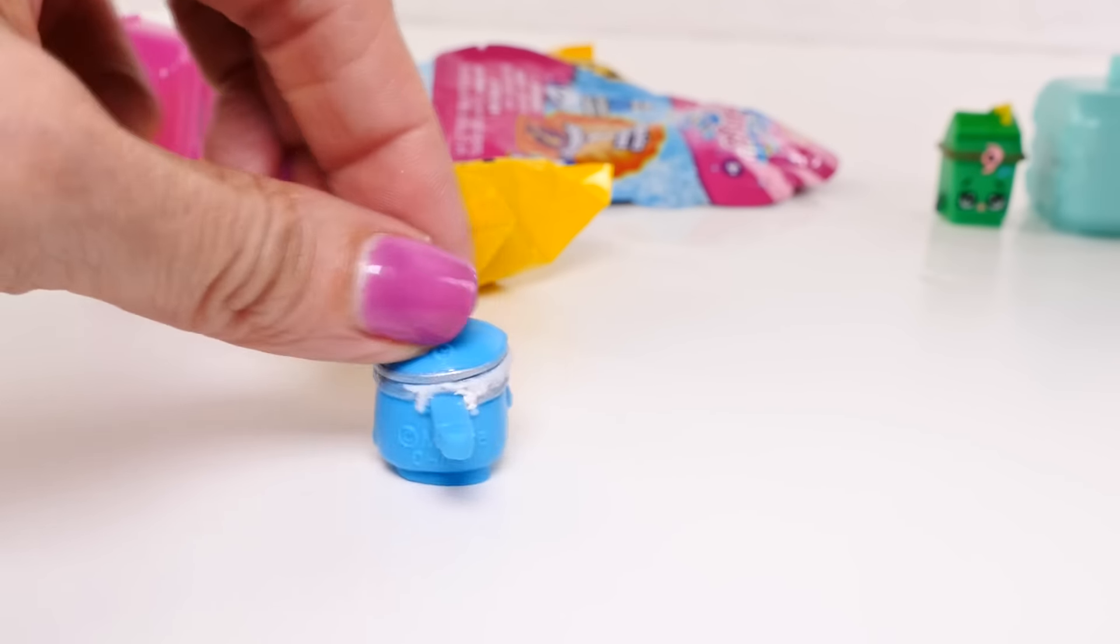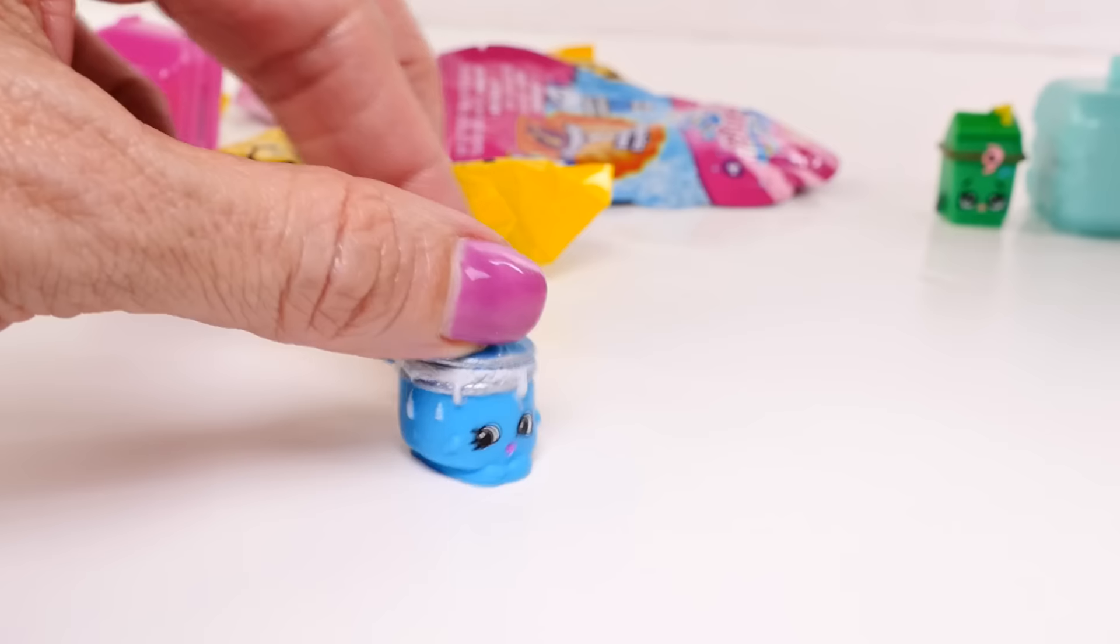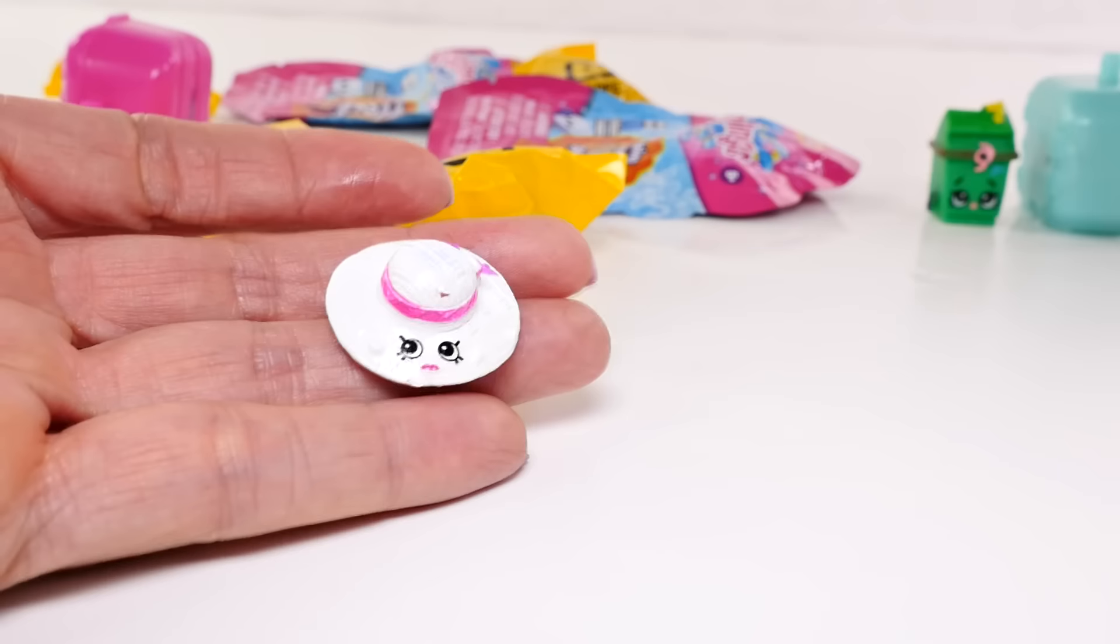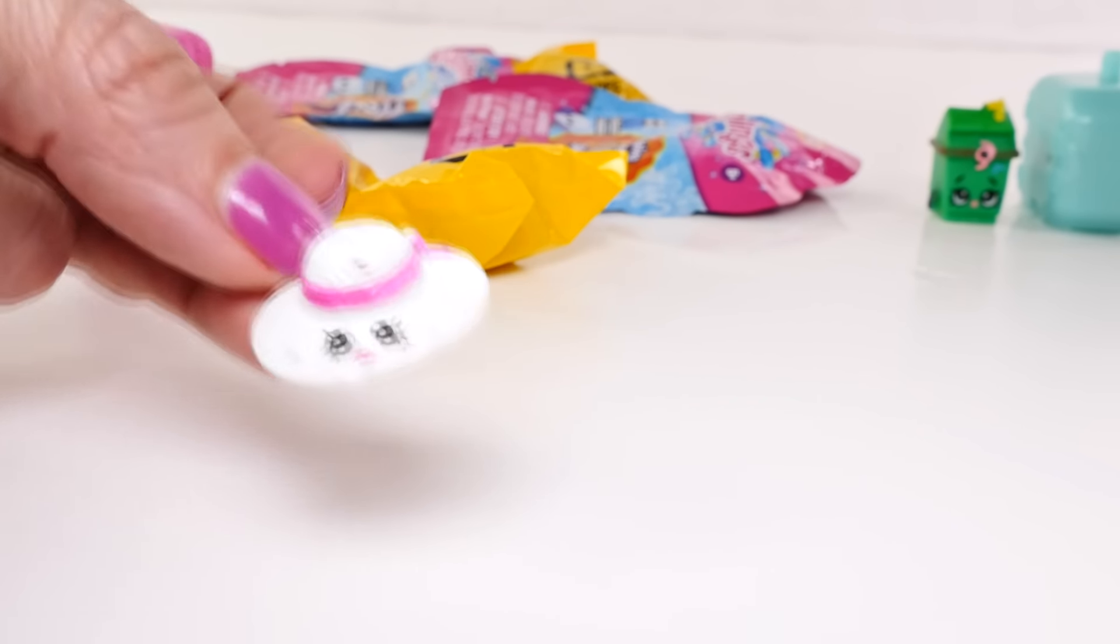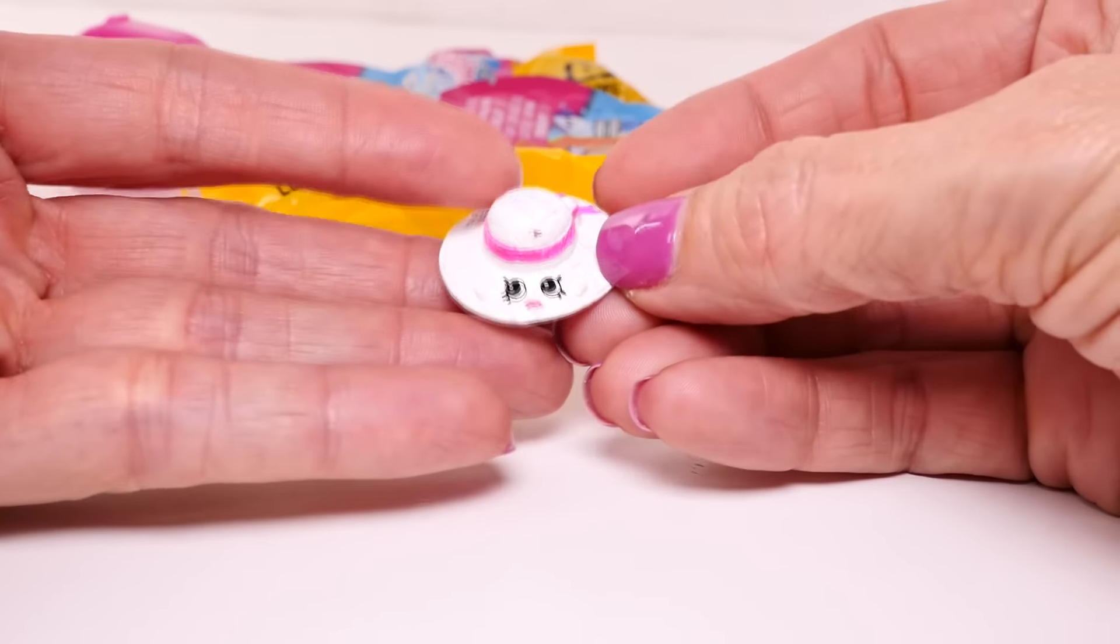Next up from season two, Saucy Pan. I love this one, I think this one is so cute. And from Fashion Spree it's Miss Floppy Hat.